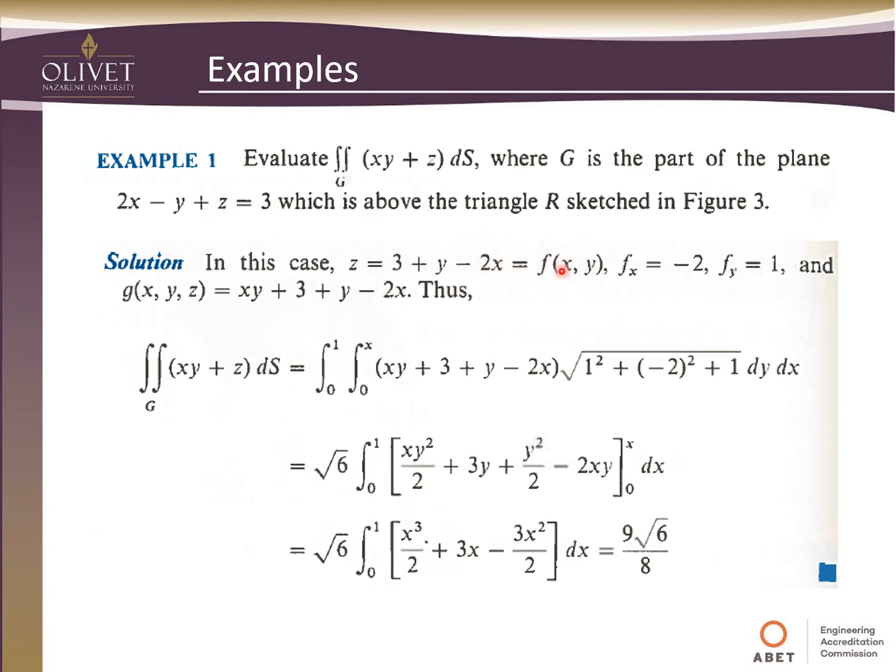So here we have that situation we just talked about where z can be expressed in terms of x and y. So that's why we're calling this our function of x and y. So F_x, which is the first derivative of this, would just be negative 2. F_y, which is the first derivative with respect to y, is 1. And now G(x, z) is equal to xy plus 3 plus y minus 2x.